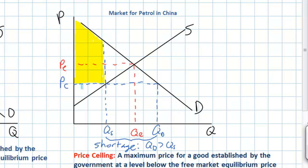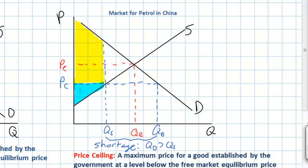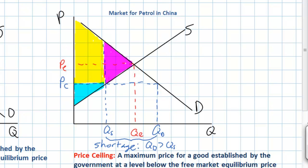The lower price of PC has a negative impact on producer surplus. Before the price control, producer surplus would have been everything above the supply curve and below the equilibrium price, represented by the blue triangle. After the price control, with a lower price, producer surplus is lower — everything below PC out to the actual quantity supplied and above supply. The price ceiling reallocates welfare from producers of petrol to consumers of petrol, but the net effect on community surplus is negative overall. There will be a shortage of petrol, implying that total welfare in the market for petrol is lower than it could be if the price were determined by the free market. The purple triangle represents the welfare loss.